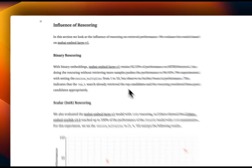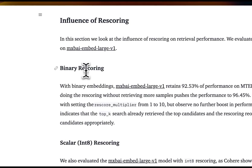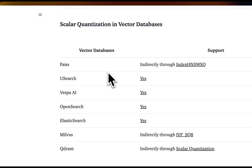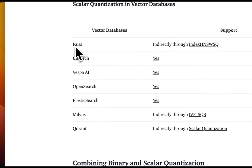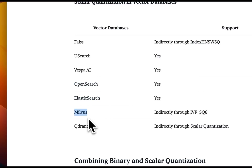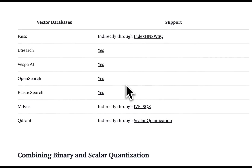The binary quantization used here has an additional part called rescoring. Keep in mind that not all vector stores support quantization. For the open-source ones, FAISS, USearch, OpenSearch, Elasticsearch, Milvus, and Qdrant do support some sort of scalar quantization of embedding models. When it comes to proprietary ones, Pinecone does have support for it. Something like ChromaDB doesn't have support for quantization yet, but hopefully they'll be implementing it pretty soon.